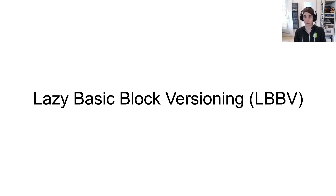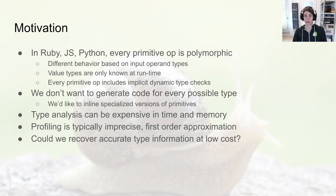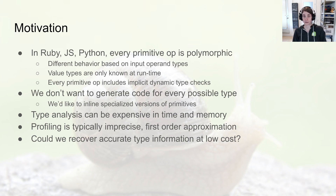I'll tell you about lazy basic block versioning, the JIT compiler architecture that YJIT is built upon. In Ruby, JavaScript, and Python, every primitive operation is potentially polymorphic — the behavior of operators like plus and minus depends on the types of input operands, but the types of values are only known at runtime. So every primitive operation must include implicit dynamic type checks. We don't want to generate code for every possible input type, though — we'd like to inline specialized versions of primitive operations. We could use type analysis, but that can be expensive and sometimes imprecise. Profiling is another alternative, but also sometimes imprecise with a runtime cost. The problem that basic block versioning aims to solve is to find a way to recover accurate type information at low cost.